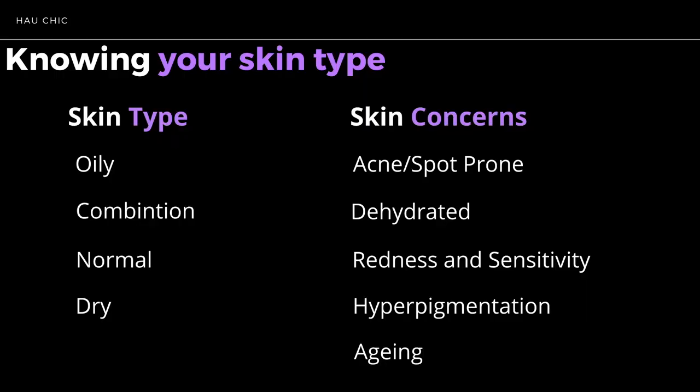Then come skin concerns. You'll have your skin type and then you pair it with whatever skin concerns you may have. This could be acne, spot-prone skin, dehydration — which is not to be confused with dry skin, because you can have oily skin but also be dehydrated; I'll get into that in a later video. You can also have redness, sensitivity, hyperpigmentation, and ageing skin. So knowing your baseline skin type and then knowing what concerns come along with that.